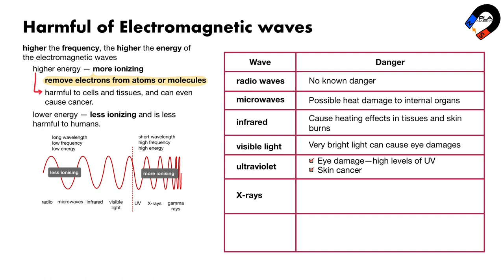X-rays are highly ionizing radiation, able to penetrate the body and cause internal damage, killing cells, causing mutation of genes, and cancer. Gamma rays have harmful effects similar to X-rays, as they are also highly ionizing radiation, causing cell death, mutation of genes, and cancer.